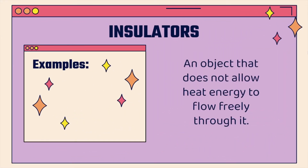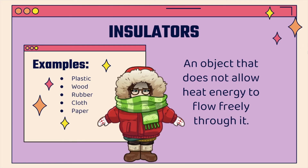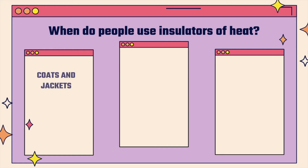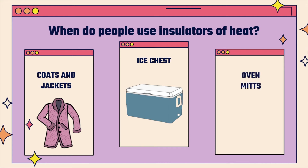An object that does not allow heat energy to flow freely through it is called an insulator. Examples of insulators include plastic, wood, rubber, cloth, and paper. That big coat I'm wearing surely does not allow heat energy to flow freely through it — it keeps it inside my coat, keeping me warm. People use insulators like coats, jackets, ice chests, and oven mitts. I wouldn't want to take those chocolate chip cookies out of the oven without an oven mitt — otherwise I would burn my hand!